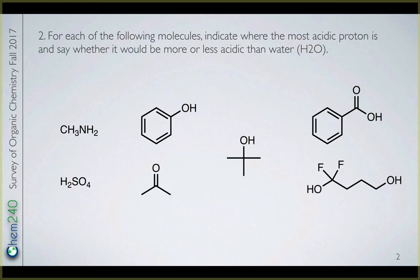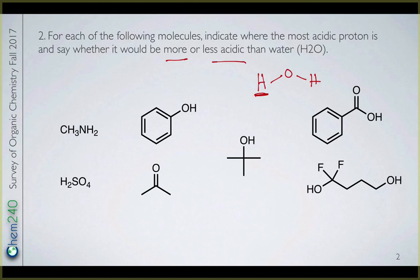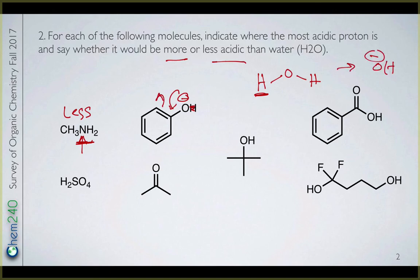Now let's take a look at the second part of this question: which of these would be more acidic than water and which would be less acidic than water? The question was trying to get you to think about how structure affects reactivity and acidity. So if we think about water attached to an OH, would that be more or less acidic? We had talked about electronegativity effects before, so NH2 — nitrogen is less electronegative than water — so this will be less acidic than water. The negative charge that we generate would be very unstable. Phenol: if you generate a negative charge by removing the proton, it would be stabilized by resonance, whereas water is not stabilized by resonance, so this would be more acidic than water.